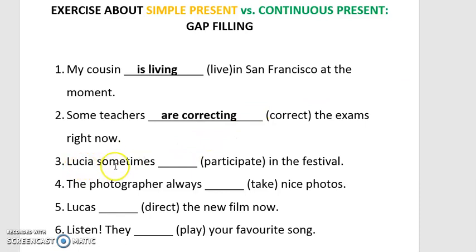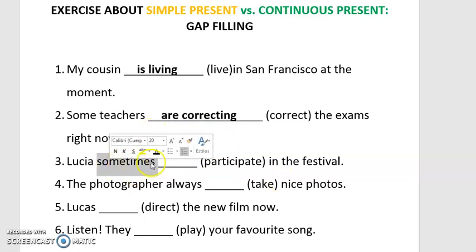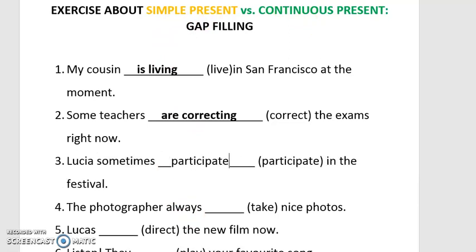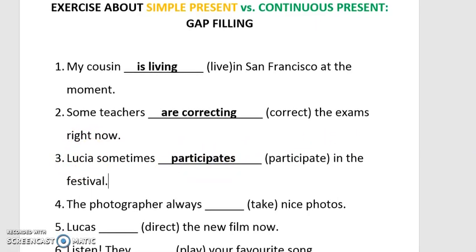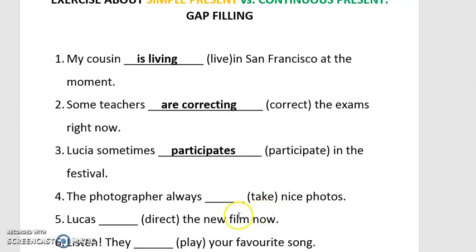Number three: 'Lucia __ sometimes participate in the festival.' The keyword is 'sometimes,' which is an adverb of frequency. When we have adverbs of frequency, we refer to actions in simple present. Since 'Lucia' is a third person singular subject, we conjugate it as 'participates.'